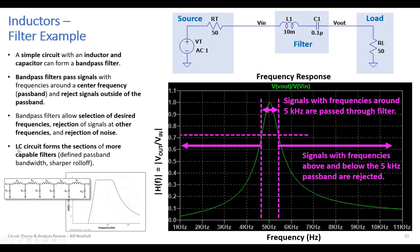You can cascade LC sections to make sharper roll-offs and wider bandwidths — defining both the bandwidth and the roll-off. This is an example of a filter design tool showing a flat passband and a really steep roll-off to reject low-frequency signals.